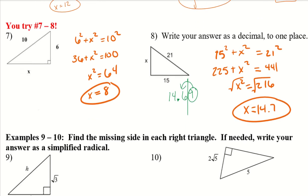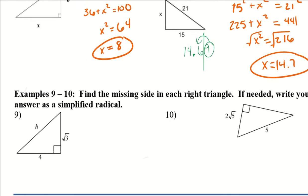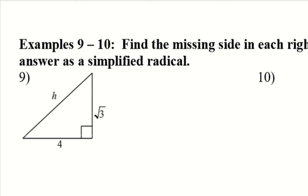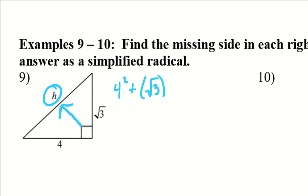Let's try a couple more examples. This time, we have some square roots as side lengths, and the answers should be simplified radicals. Going opposite the 90 degree, H is the hypotenuse. So I have 4 squared plus the square root of 3, all squared, equals H squared.